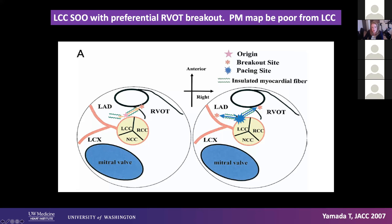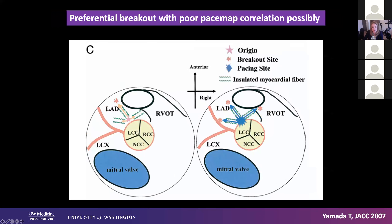There's some overlap here because of these insulating fibers — it's not as simple as best pace map, best timing. This is even worse in this area if you're doing redo procedures, and that also means redo mapping during your own procedure. Lots of mapping before you come on RF the first time is important. The saving grace is that our irrigated tip catheters with good contact force are able to do a lot of destruction in the area — though that's a humbling thing when you think about the salmon-colored arteries we're right next to.